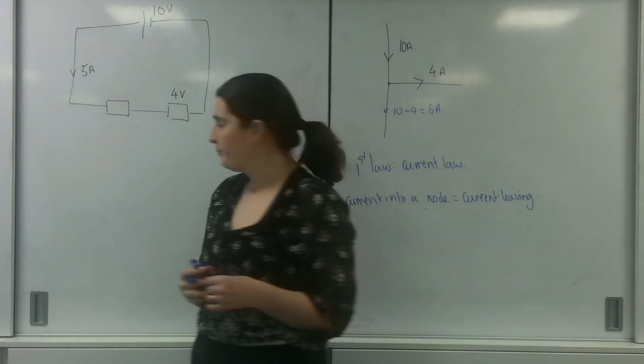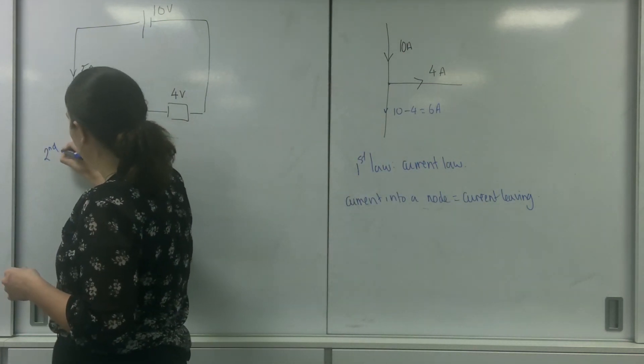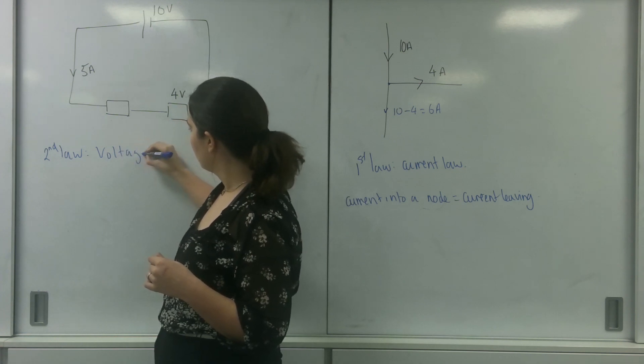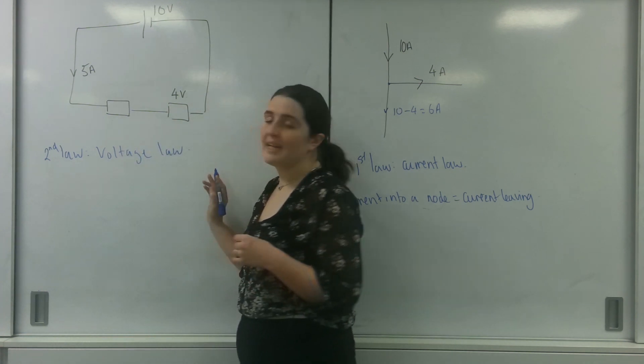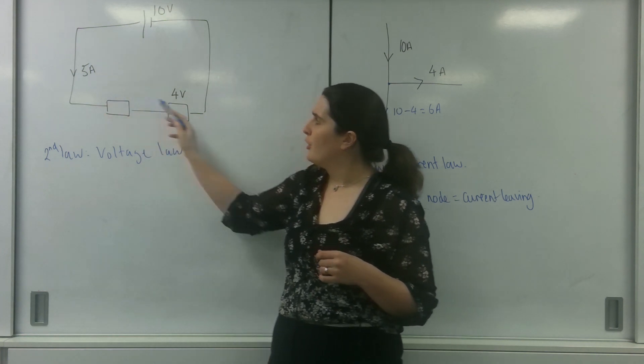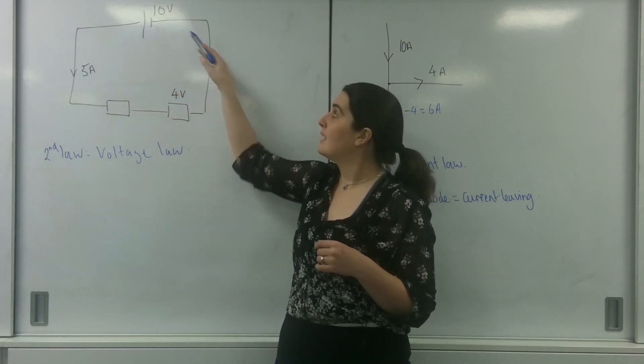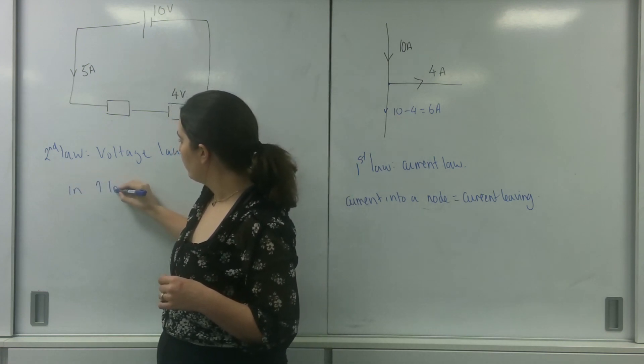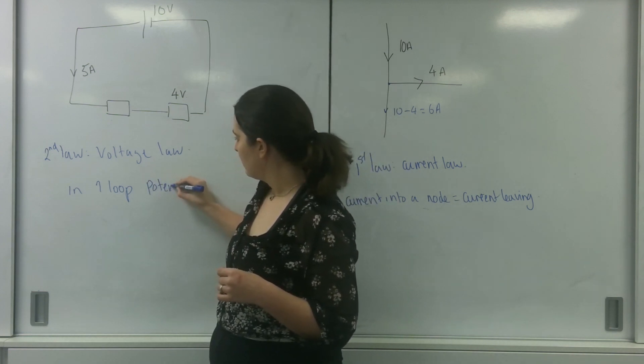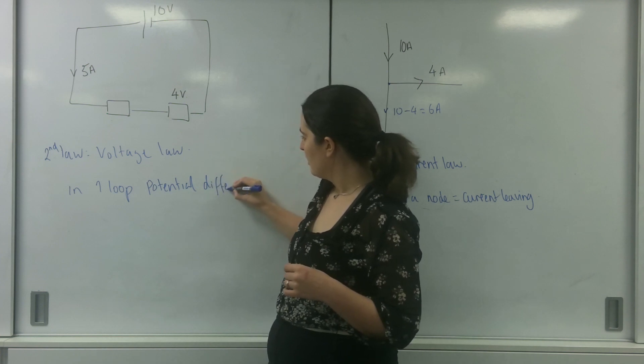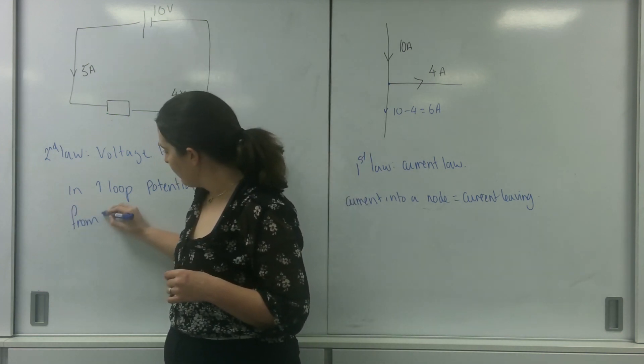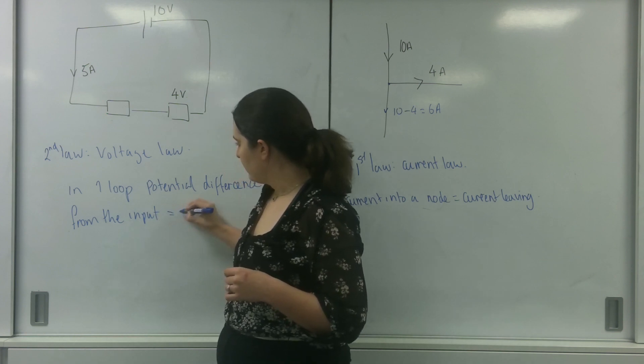Kirchhoff's second law, so this is the second law, also known as the voltage law, states in one loop, one flow of electrons going from the positive terminal to the negative terminal. In one loop, potential difference from the input must equal the output.